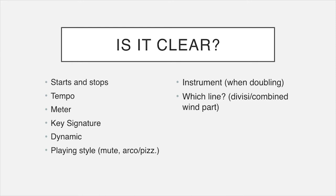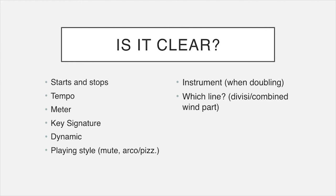Moving on to preparing excerpts — the main thing is making sure everything within the excerpt is clear. We want to give people truly equal ground for playing these excerpts so everything comes down to their playing. The main thing is obviously starts and stops, but also tempo — which can be difficult to clarify because of how many local tempo changes there are. You also need to consider meter, key signature, dynamic, playing style, whether it's muted or arco, transposition for brass instruments, the specific instrument if it may be changing or doubling, and for string parts or combined wind parts in French repertoire, which line it's going to be — indicated with an arrow.